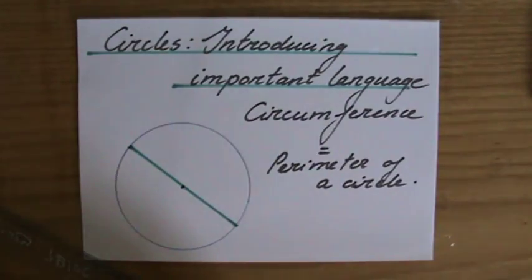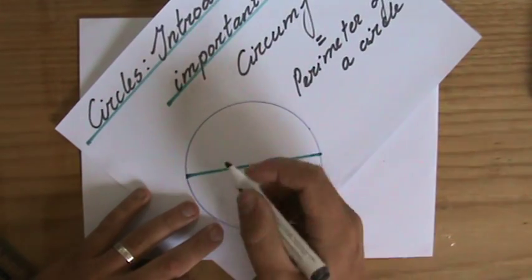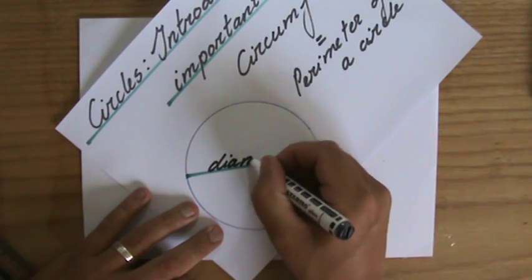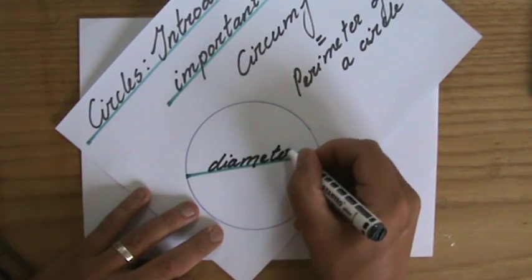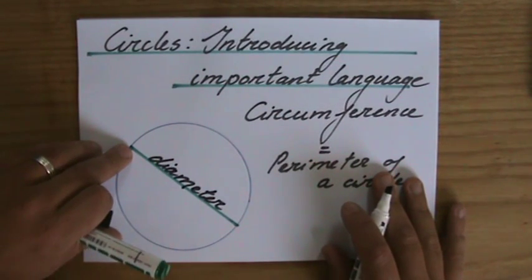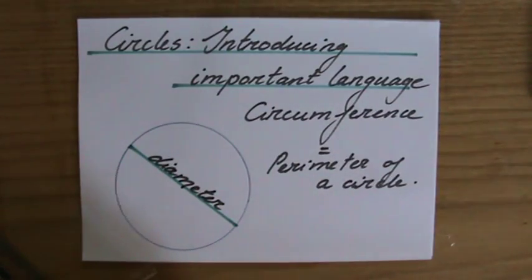And that will all make sense later. We call that line the diameter. So that is a line from one side of the circumference through the midpoint to the other side of the circumference. That is the diameter.